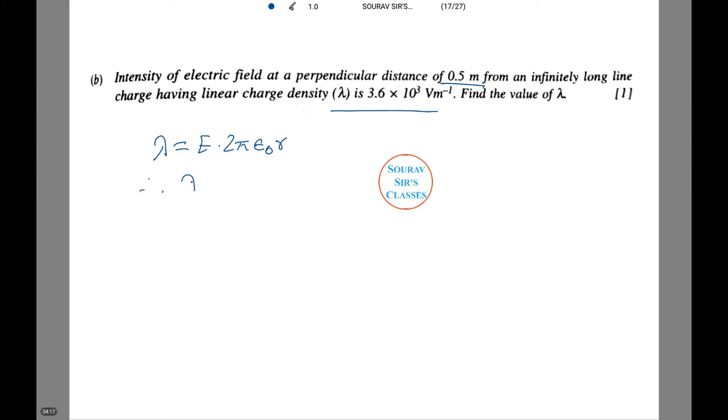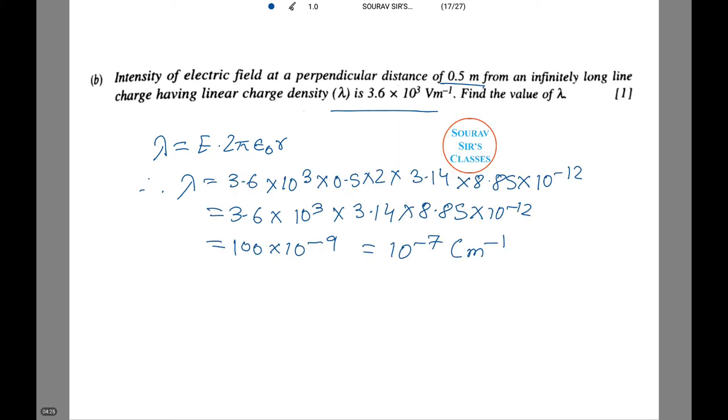Therefore, λ, I am putting in the values so that there is no time wasted on this video for you to see. λ equals 3.6 × 10³ × 0.5 × 2 × 3.14 × 8.85 × 10⁻¹². Thus, upon calculation, it comes to 10⁻⁷ coulomb per meter. And thus, this is the answer. Seems easy?